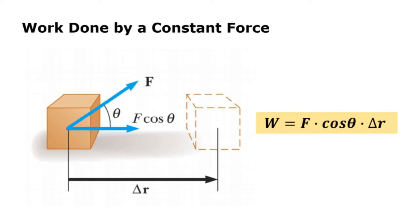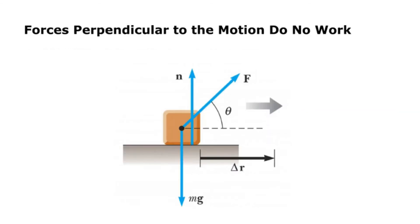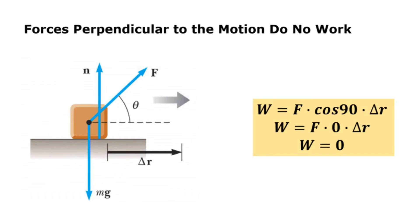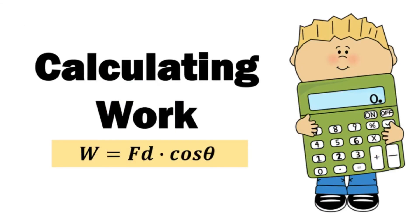This is expressed in the equation: work equals force times cosine theta times delta r, or the displacement. Forces perpendicular to the motion do no work. This is because when an object is displaced horizontally on a flat table, the normal force N and the gravitational force Fg do no work, since cosine of 90 degrees equals zero. Now let us try to calculate work by solving some sample problems.